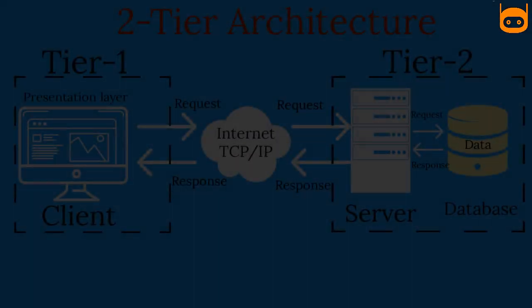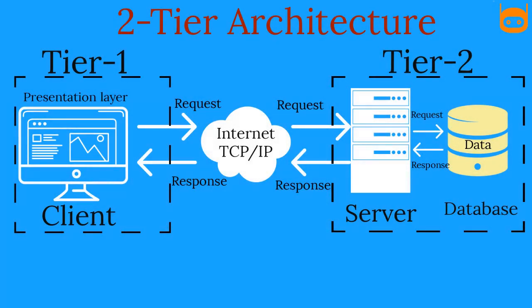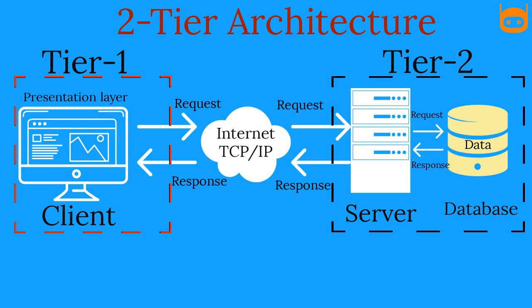Two-tier architecture is where the presentation layer runs on a client and data is stored on a server. In this architecture, the client requests data or resources from the server, and the server processes that request. The client and server reside on separate tiers and communicate with each other through the internet or any network. This structure is quite easy to maintain and modify.